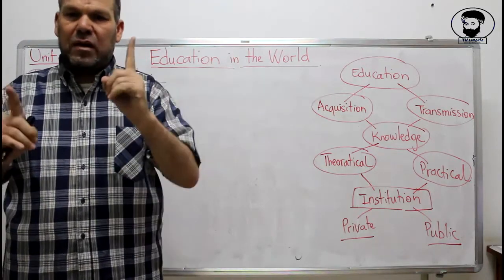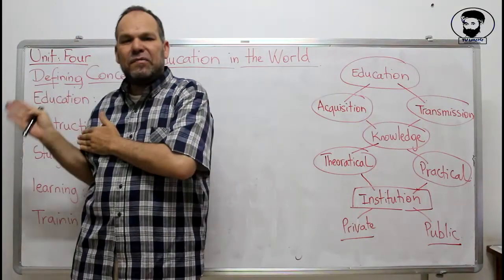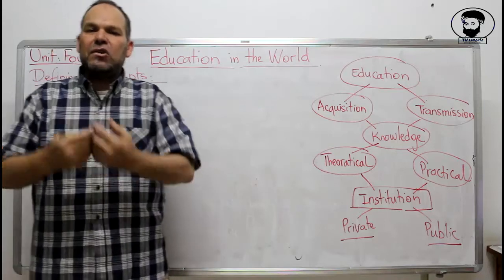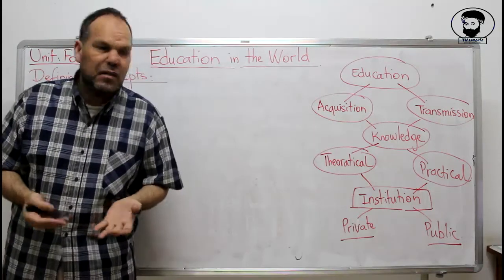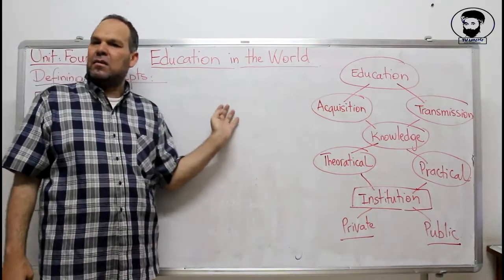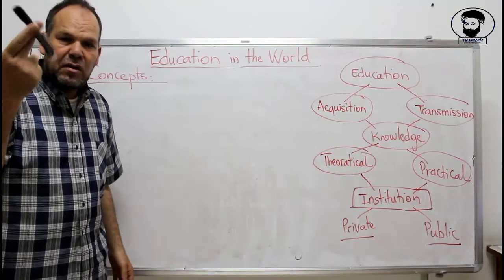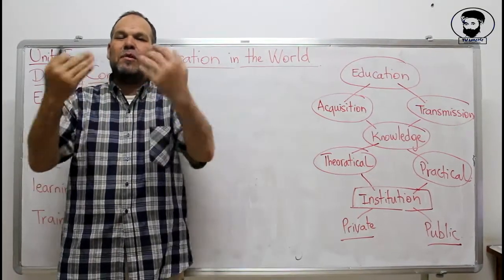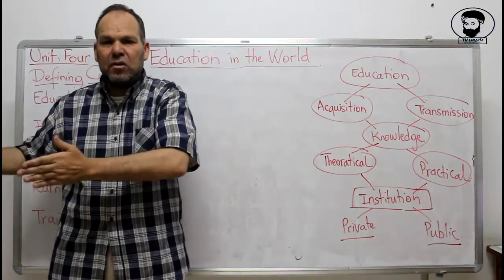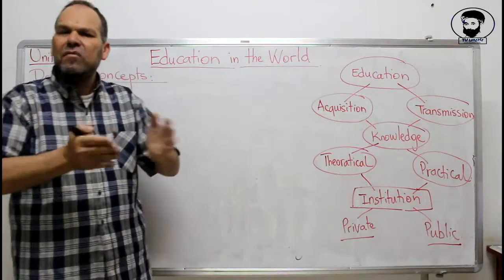Education is one — there is one education, but the systems are different from one country to another. For example, in Algeria as in China, as in the USA, as in Australia, there is a school. There is a teacher, there are pupils, tables, chairs, a library. All these are common things that we have in every country.